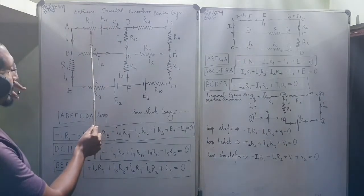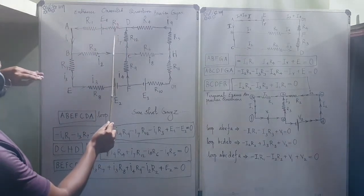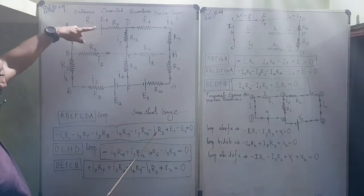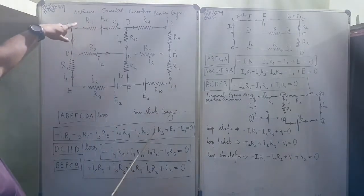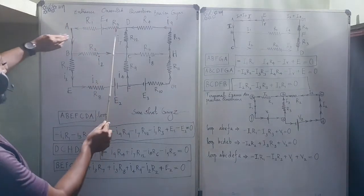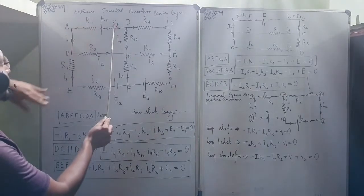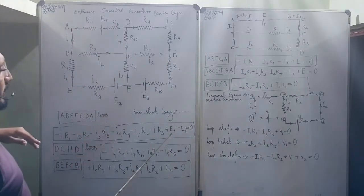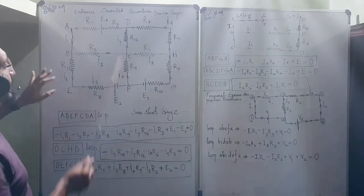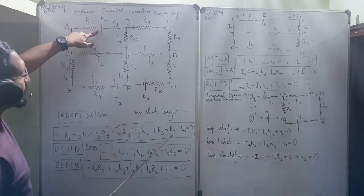Minus I1 is going over here. Then I1 current is coming over here. I1*R3. R3 is resistance over here. The same current I1 is coming over here.